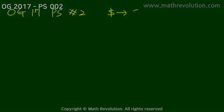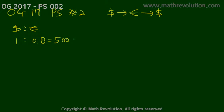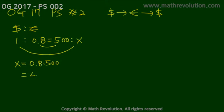We're on Official Guide 2017 problem solving question number two. Here we're dealing with converting dollars into euros and then converting back into dollars again. Each dollar is worth 0.8 euros, and we're trying to figure out how much 500 dollars is worth in euros. Let's call it x. X equals 0.8 times 500, which equals 400 euros.